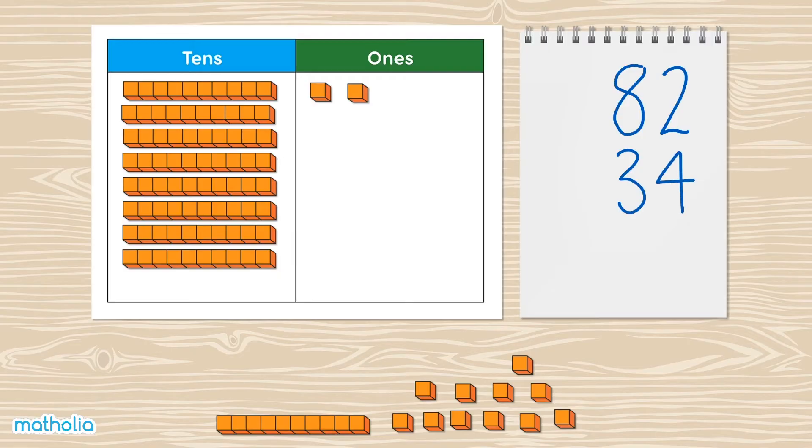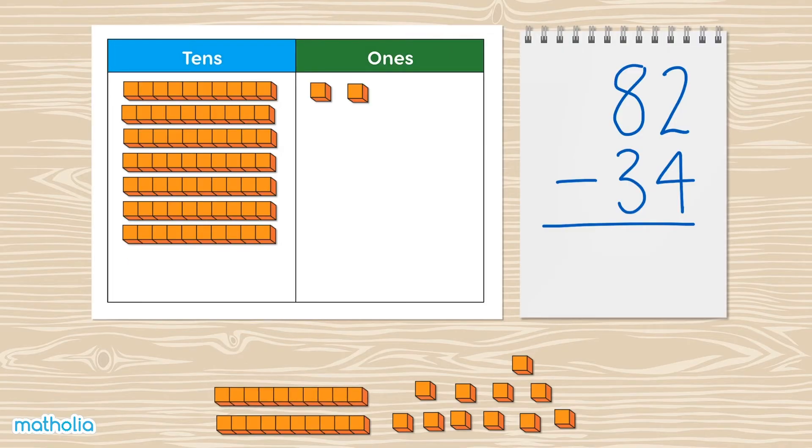34 here. We can subtract by taking away blocks. Let's start with the ones. Hmm, we can't take away four ones from two ones. Let's change one of our ten blocks for ten